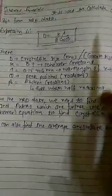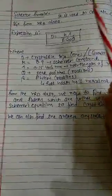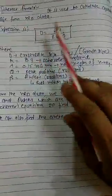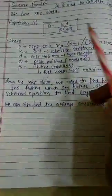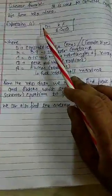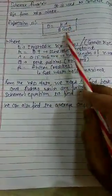This formula was given by Scherrer, which is basically used to calculate the crystallite size from the XRD data available. What is the Scherrer formula? It is D equals K lambda upon beta cos theta.